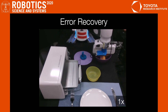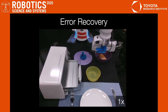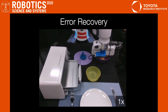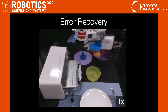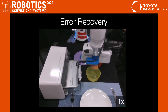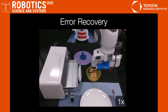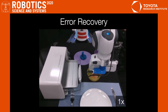Our policy is very reactive and can quickly recover from errors. In this case, the policy failed to grasp the bread twice and finally succeeded the third time. It also made two attempts to get a good grasp of the bowl and complete the task successfully.